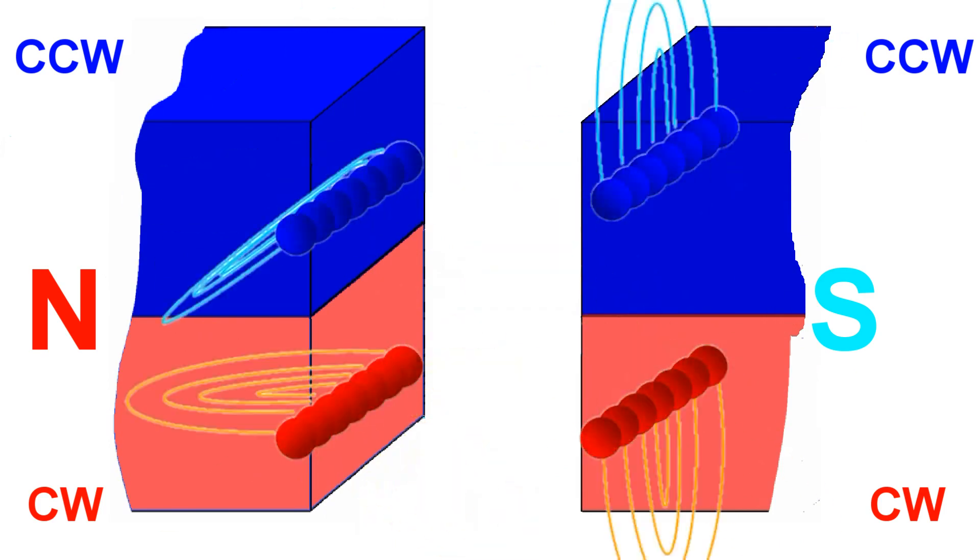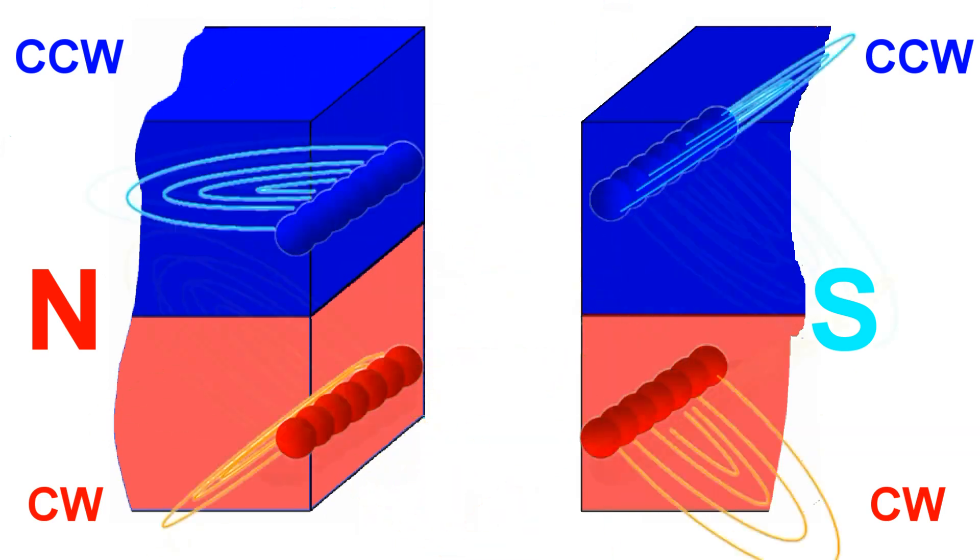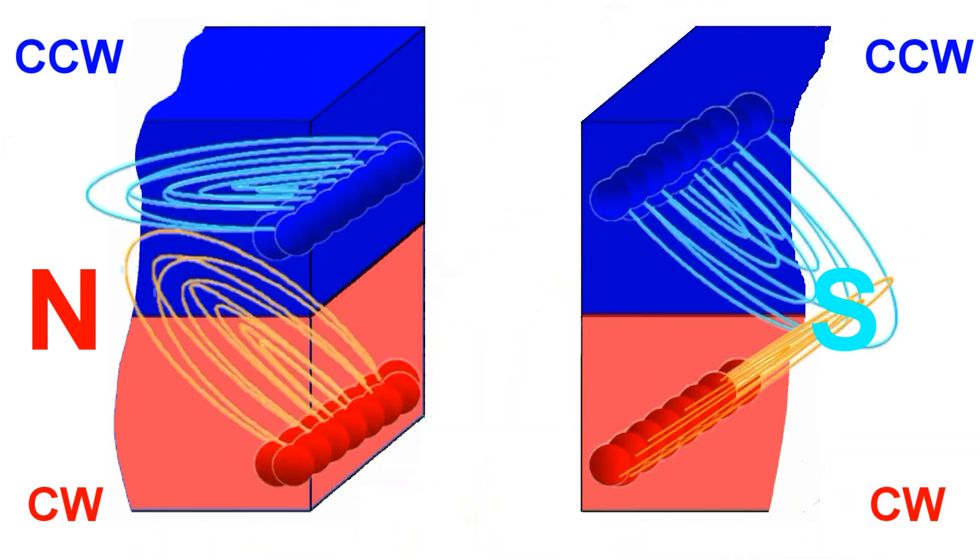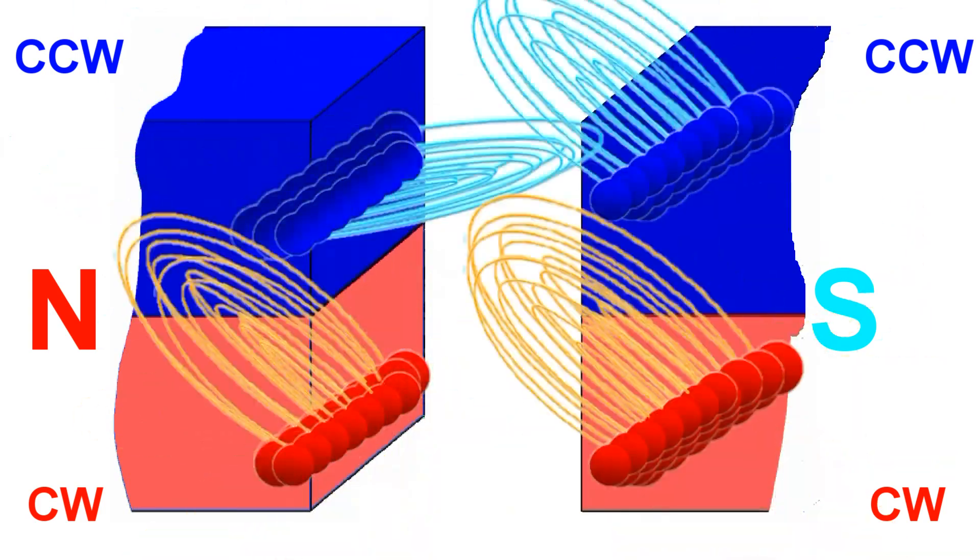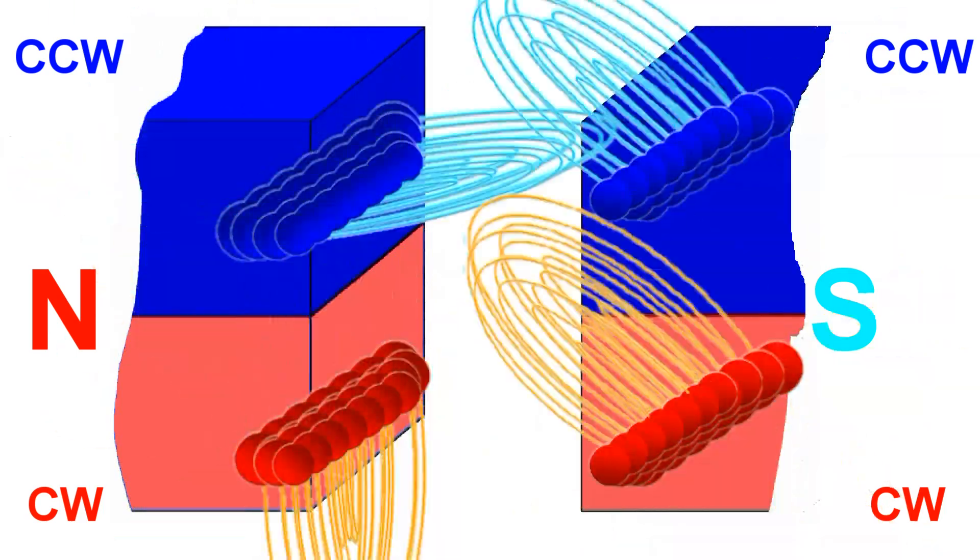The threads go through each other despite a faint subatomic friction. The more threads that intervene, the stronger the attraction between the two magnets. The number of threads that participate is a function of distance.